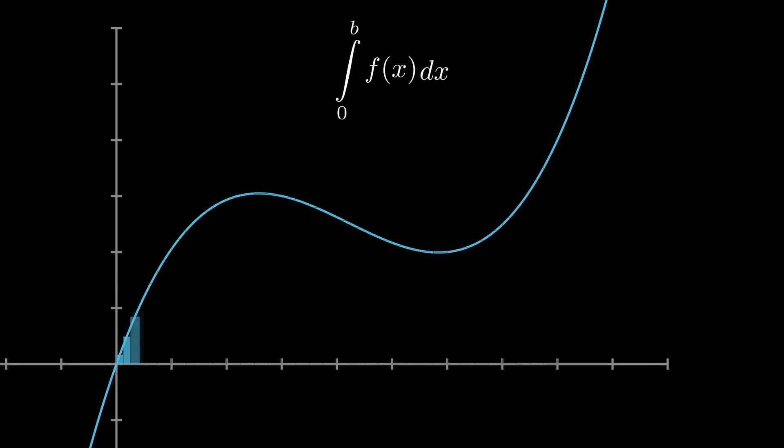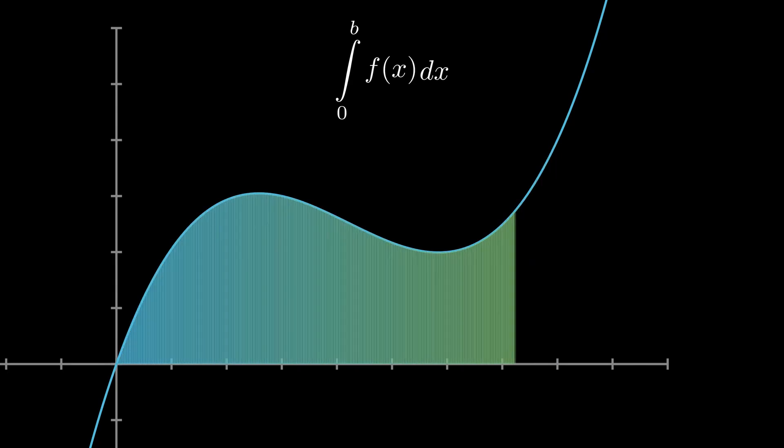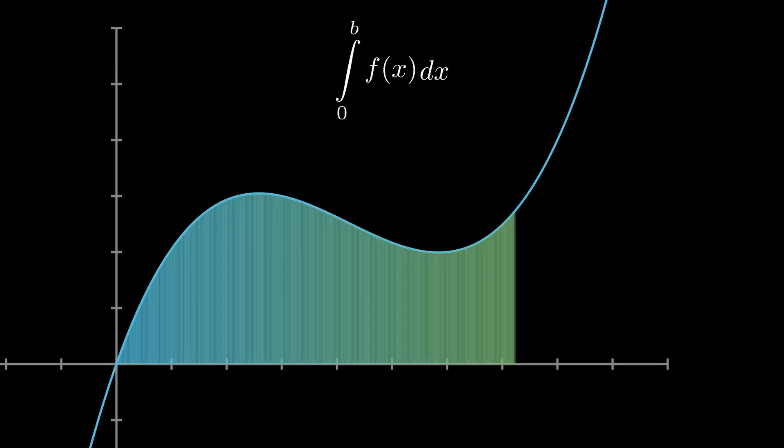The area under such a sufficiently smooth function can be approximated by a series of rectangles. As the number of rectangles tends to infinity and the width of the rectangle tends to zero, the total area of all the rectangles approach the area of the curve.